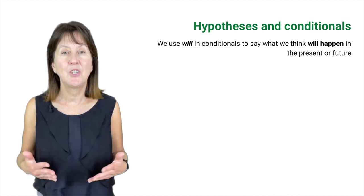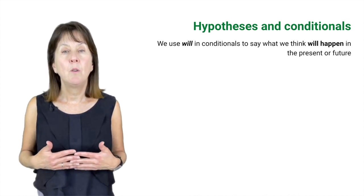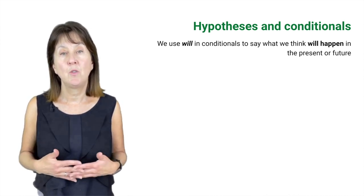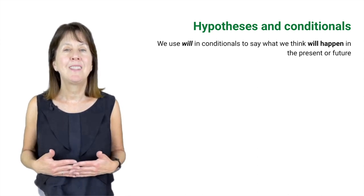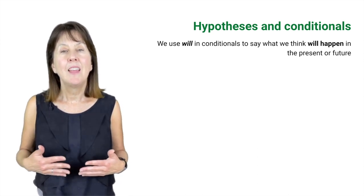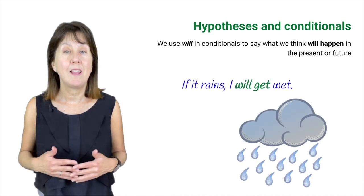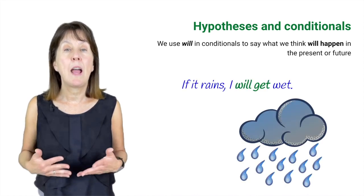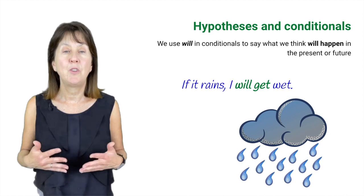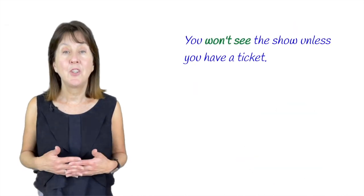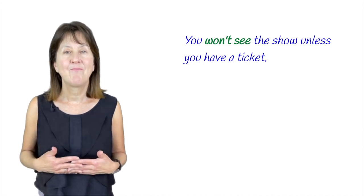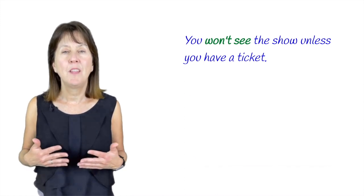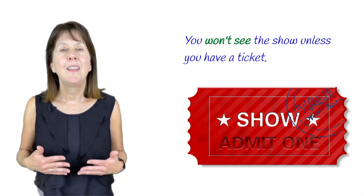Moving on to hypotheses and conditionals. We use will in conditionals to say what we think will happen in the present or future. For example, 'If it rains, I will get wet' — this is what we think will happen in the future. Or 'You won't see the show unless you have a ticket' — again what you think will happen in the future.